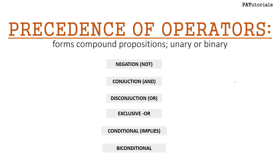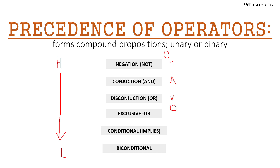Now we move to our last topic: the precedence of operators, listed from highest to lowest. First is parentheses, then negation, then conjunction, disjunction, exclusive or, conditional, and finally biconditional. Precedence tells us which operator we should prioritize first.